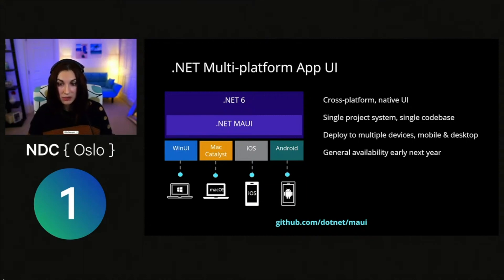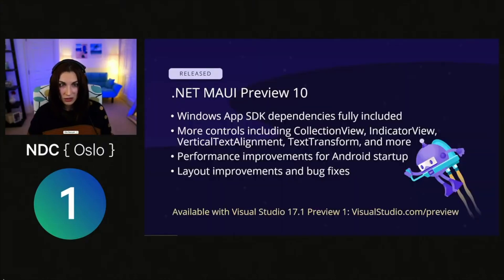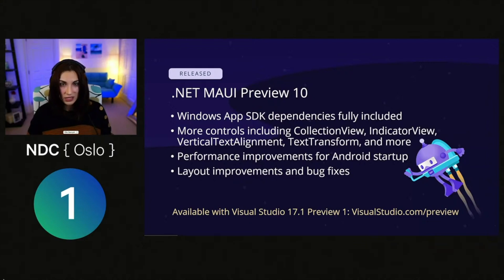.NET MAUI on Windows uses WinUI, so apps can use all the newest native Windows features. You build all these applications for any device from a single code base and project system — one language, one set of libraries, one UI stack for all platforms. .NET MAUI will be released in spring 2022, but Preview 10 is already available. It includes fully integrated Windows App SDK dependencies, more controls including CollectionView and IndicatorView, Android startup performance improvements, layout improvements, and many bug fixes. Best Visual Studio support for MAUI is in Visual Studio 17.1 Preview 1.